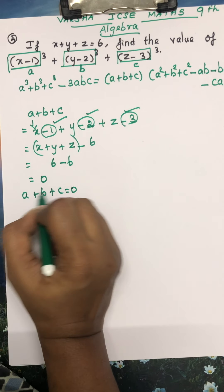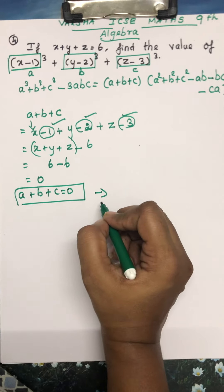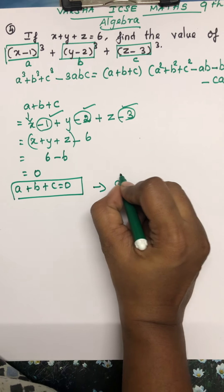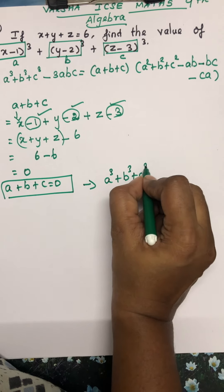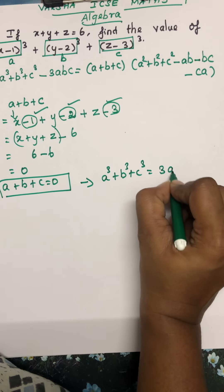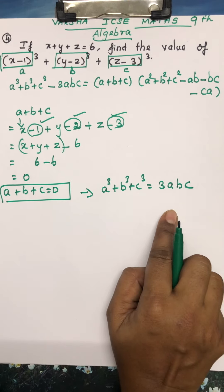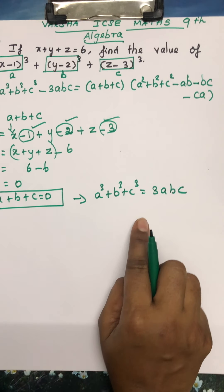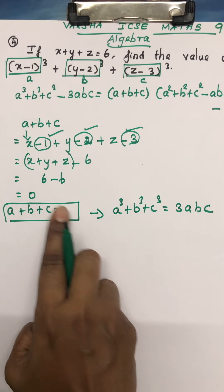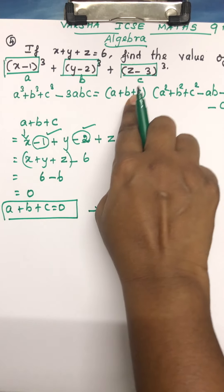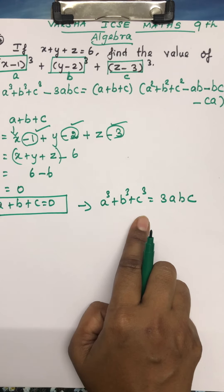So a + b + c = 0. Whenever a + b + c = 0, we can write a³ + b³ + c³ = 3abc. This is a very important step — whenever a + b + c equals 0, the identity simplifies so that a³ + b³ + c³ equals 3abc.